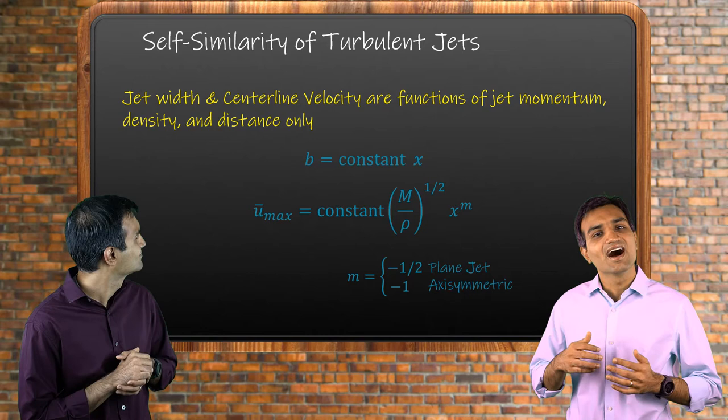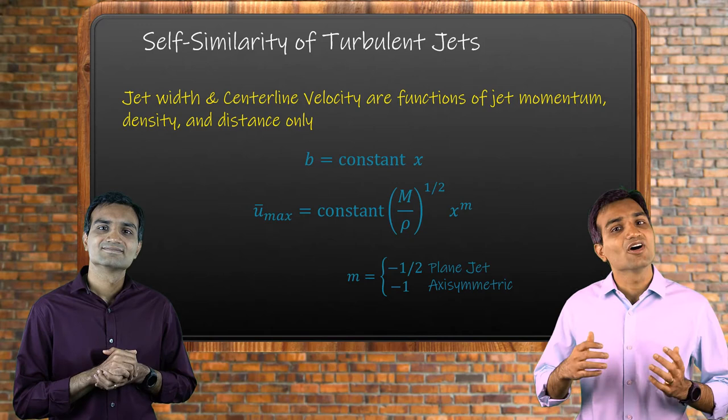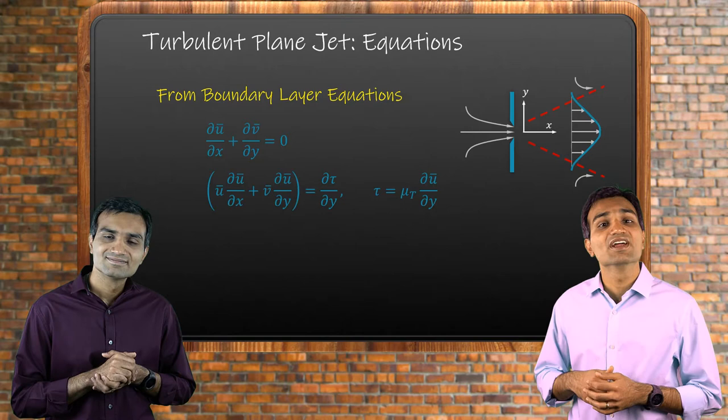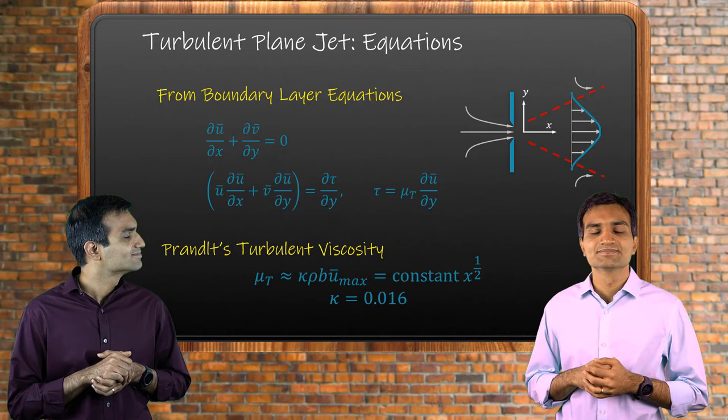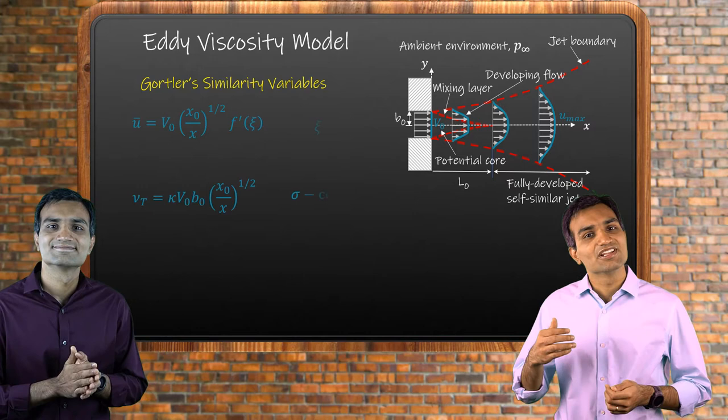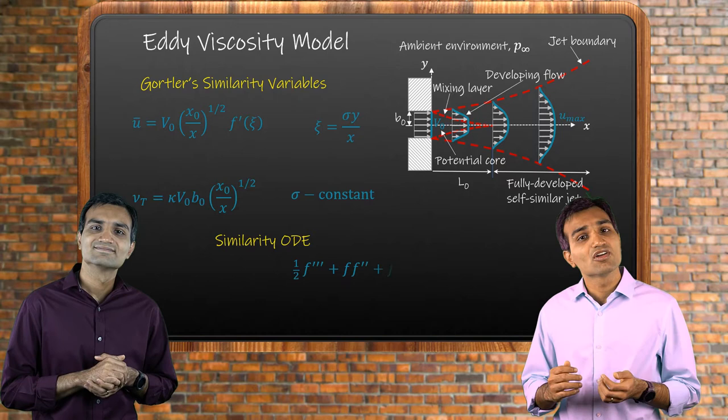Unlike laminar jets, these constants are unique and are independent of the flow Reynolds number and are obtained experimentally. The simplest model for eddy viscosity was proposed by Prandtl, where the viscosity varies as a function of square root of x. Gottler in 1942 proposed similarity variables to compute the jet width for turbulent jets. Similar to the laminar jet analysis, a single ordinary differential equation is solved using the same boundary conditions.